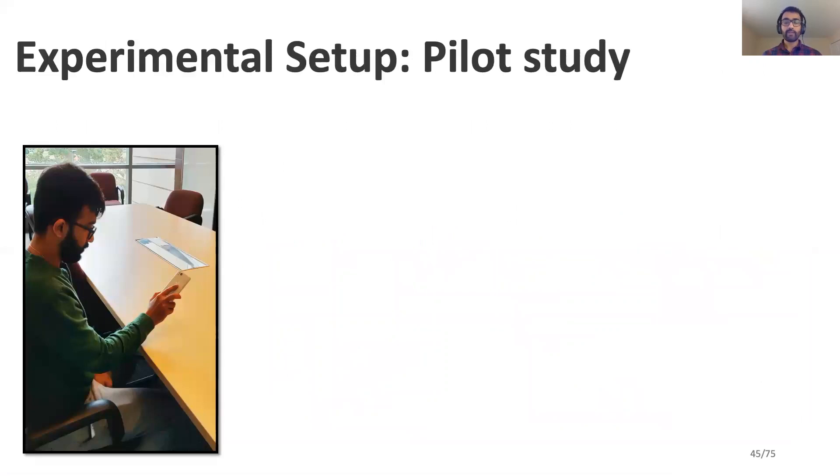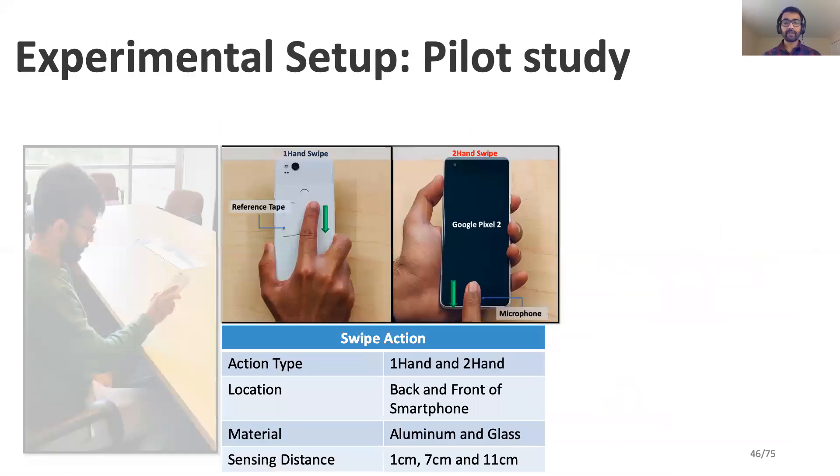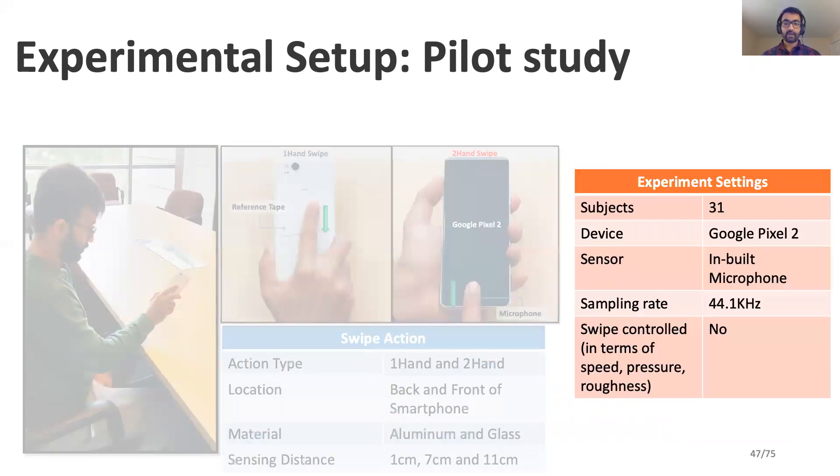To determine the potential of our SonicPrint system, we conduct a pilot study. We ask several users to swipe both on the back and front of the Google Pixel 2 smartphone at different locations. Based on the location, the smartphone's surface may change from glass to aluminum and the sensing distance might vary from 1, 7, and 11 centimeters to the inbuilt microphone. We recruit a total of 31 subjects across an age of 18 to 50 years. During the swipe actions, we ask each subject to do a natural swipe without restricting their pressure or speed. This was done to make sure that our pilot study resembles close to a real-world scenario.